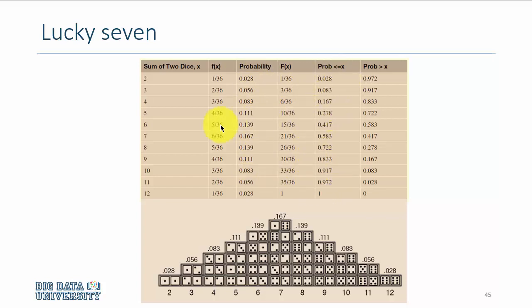The probability of getting 6 or greater than 6 is 0.58, or getting less than or equal to 6 is 0.417. If you sum these up, it's 1. 0.028 plus 0.972 is 1. This plus this is 1, and 1 plus 0 is 1. The probability of getting 12, that is both dice show 6, is 1 out of 36 possible outcomes, which is 0.028.